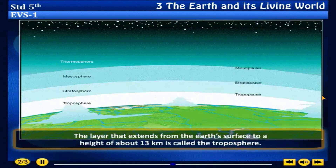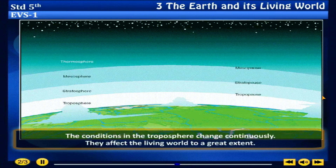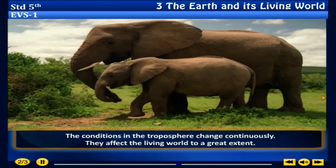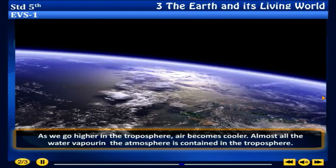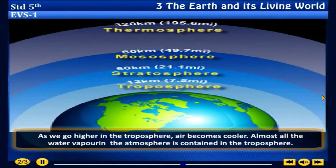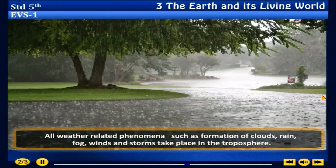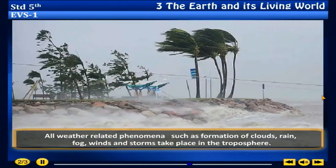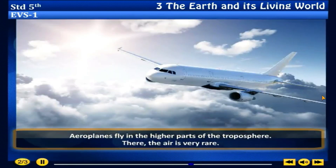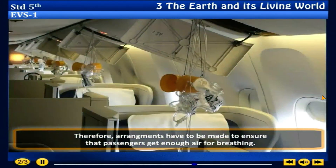The layer that extends from the earth's surface to a height of about 13 km is called the troposphere. The conditions in the troposphere change continuously and affect the living world to a great extent. As we go higher in the troposphere, air becomes cooler. All the water vapor in the atmosphere is contained in the troposphere. All weather-related phenomena such as formation of clouds, rain, fog, wind and storms take place in the troposphere. Aeroplanes fly in the higher parts of the troposphere, where the air is very thin, so arrangements must be made to ensure passengers get enough air for breathing.